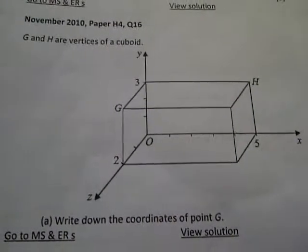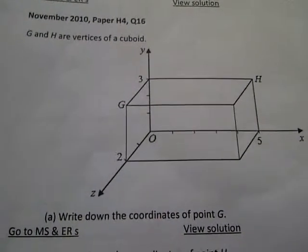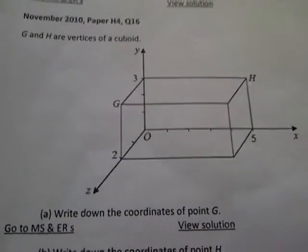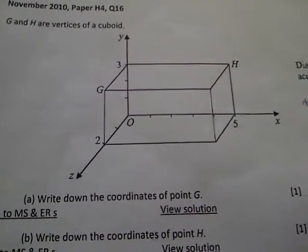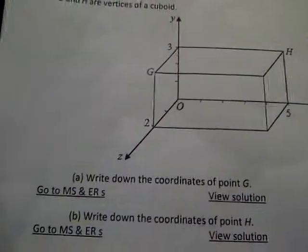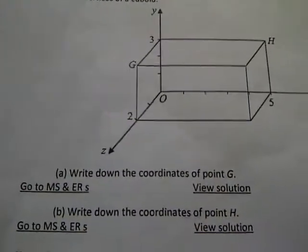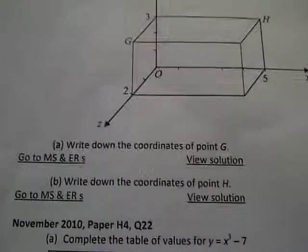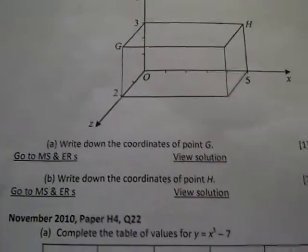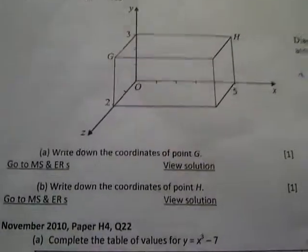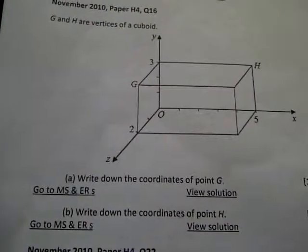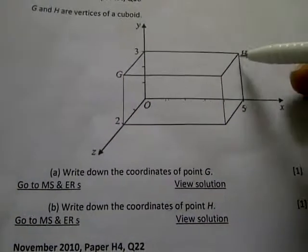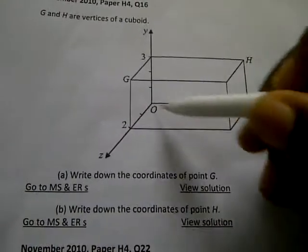This question says G and H are vertices of a cuboid. We need to write down the coordinates of point G and the coordinates of point H. This takes us to a new topic.